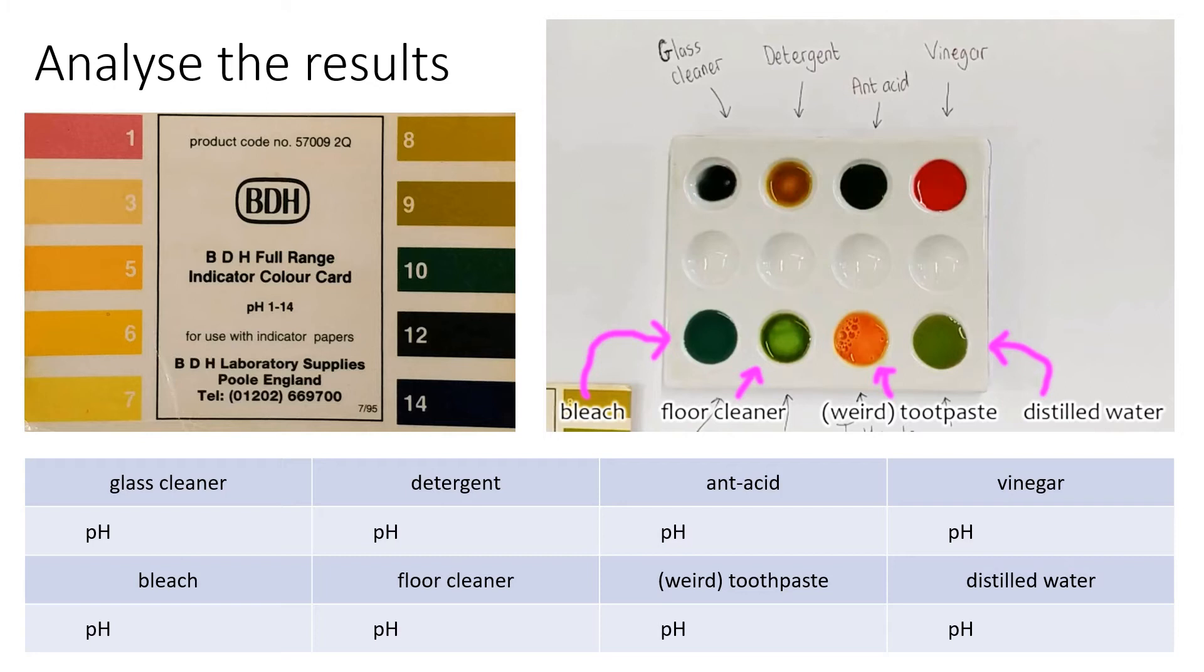The toothpaste is the one that really threw me because when we dropped the universal indicator in, it was an alkali color but it changed to an acidic color, which is very strange. Also the distilled water gave us a very strange result because according to our color chart, green is very much an alkali and distilled water is pretty much the very definition of pH 7. And in the table below you can see that it's empty and we're about to go to the results.